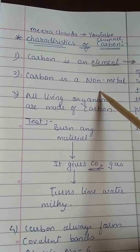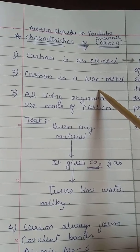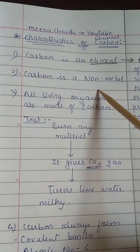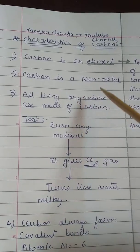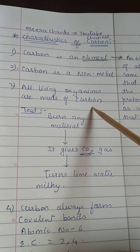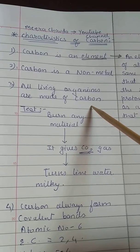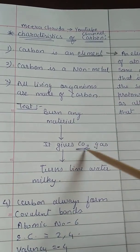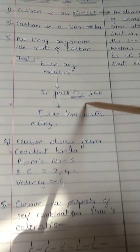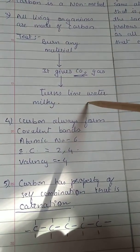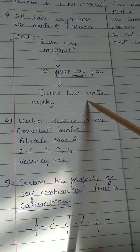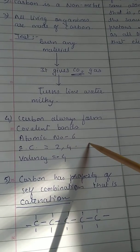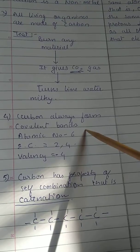Non-metal means it has a capacity to gain electrons. Metals are those substances which give electrons, but carbon is a non-metal so it will gain electrons. All living organisms are made up of carbon, and the test is: when any material is burned it will give CO2 gas, and this CO2 gas will turn lime water milky.